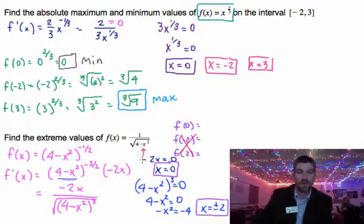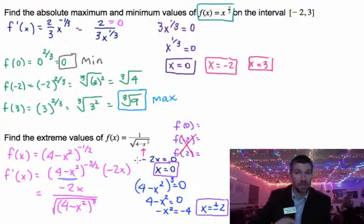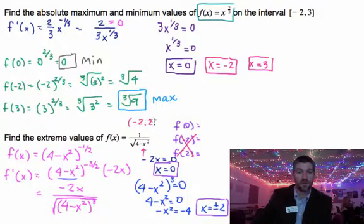If you'll notice right here, if I do 4 minus 4, that's a 0, I'm undefined at that point. So I can't include that particular endpoint as a possible max or min because this is only going to be on the open interval from negative 2 to 2.